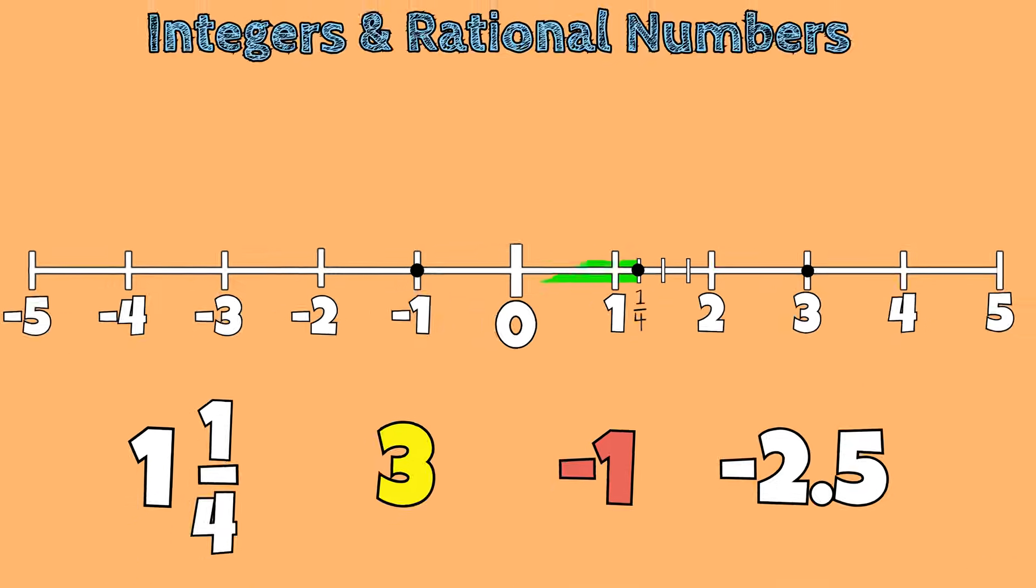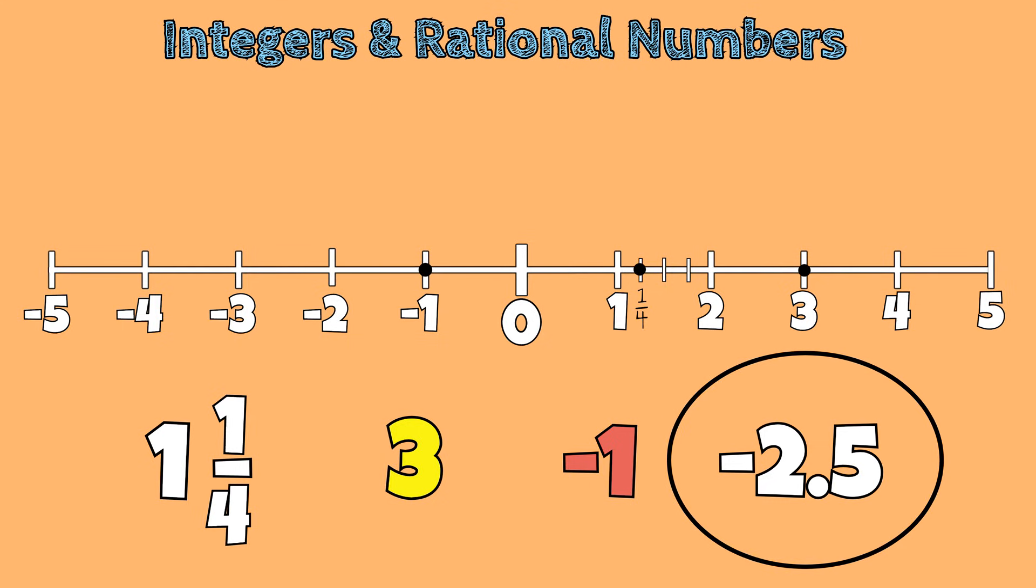That leaves the number negative 2 and 5 tenths. We know that negative 2 and 5 tenths is in between negative 2 and 3. To represent the integer negative 2, we can move two whole units to the left. We know that 5 tenths is equal to 1 half.